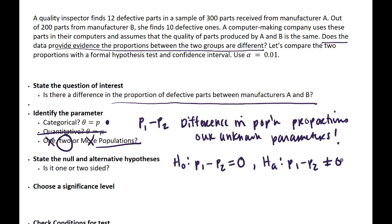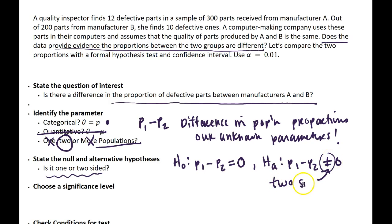We need to determine whether this is a one or two-sided test, which will affect how we find our p-value after computing our test statistic. Because we're asking if there's a difference, there's a 'not equals' in our alternative. This implies it will be a two-sided hypothesis test and a two-sided p-value, because we have a two-sided alternative.